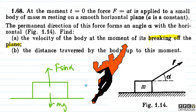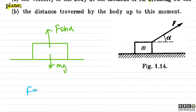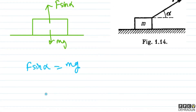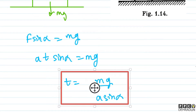यहां पर हम लोग क्या लिख सकते हैं — F sinα has to be equal to mg. तो यहां से देखिए, F के बदले हम लोग at लिख देंगे, तो a·t·sinα = mg, जिससे हमारे पास time में आ गया: t₀ = mg / (a·sinα).